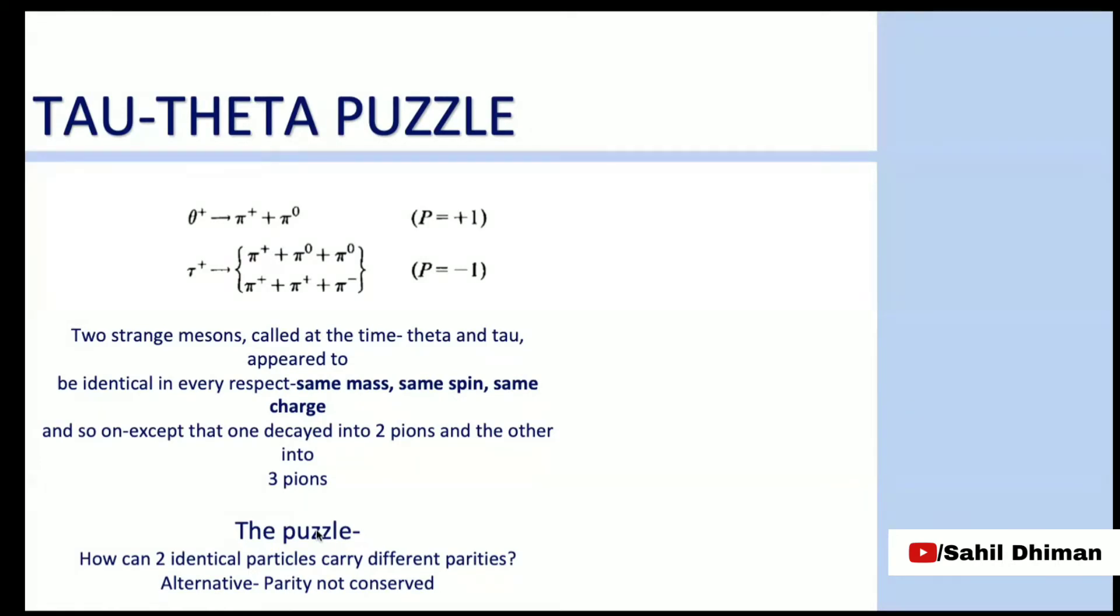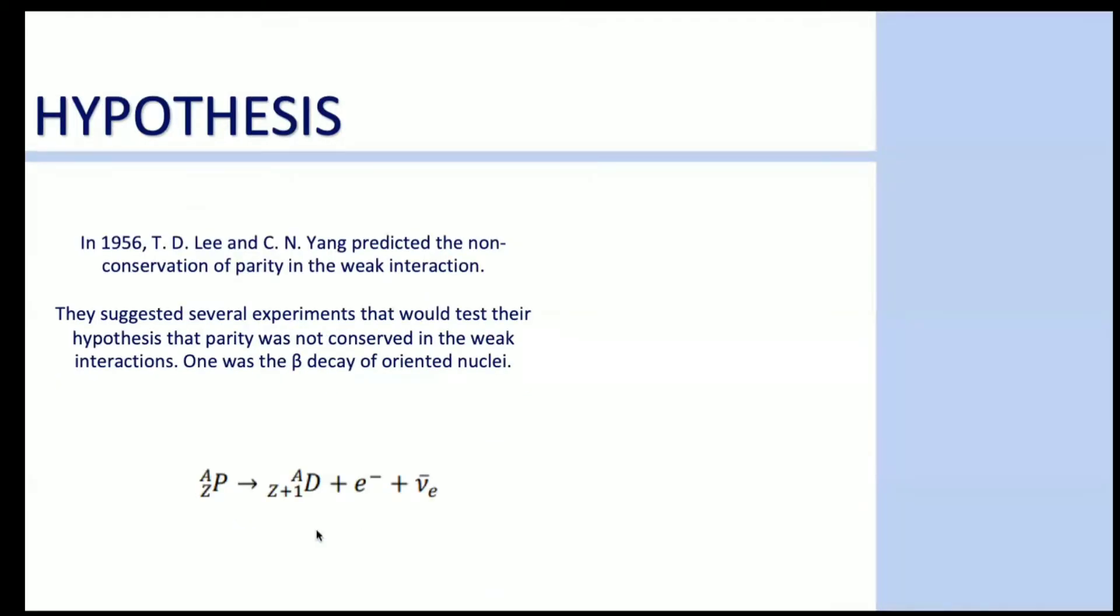Lee and Yang predicted the non-conservation of parity in the weak interaction. They were studying the tau-theta puzzle and looked through the literature. They found ample evidence for parity conservation in strong and electromagnetic processes, but there was no strong evidence that would support or refute the claim that parity is conserved in weak interactions. Experiments were not devised for this. So they suggested that maybe parity is not conserved, and they devised experiments to study this. One experiment was the beta decay of oriented nuclei.